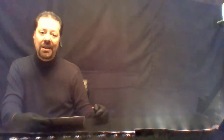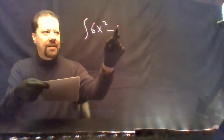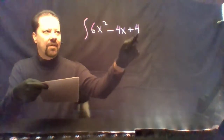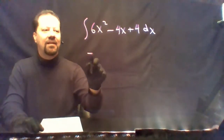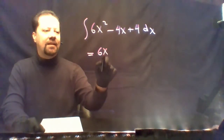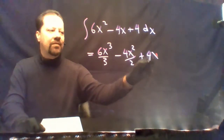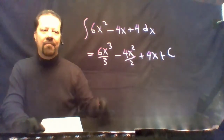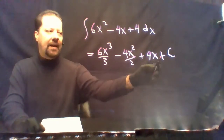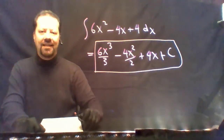Now that you've demonstrated some basic differentiation skills, you also need to demonstrate some basic integration skills. We'll begin with the integral of (6x² − 4x + 4) dx. Applying the power rule for antiderivatives gives 6x³/3 − 4x²/2 + 4x + C. On indefinite integrals, don't forget to add C. Put a box around it — it's done.